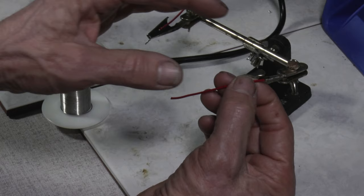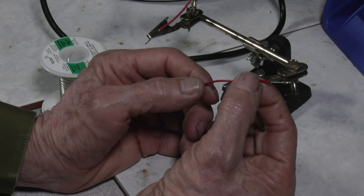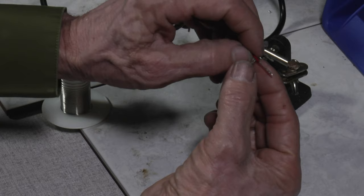We want to see the strands of the wire being soldered. If you can't see the strands of wire, that means you put too much solder on it.